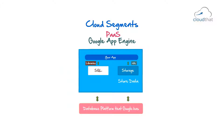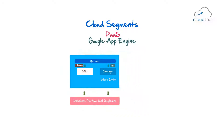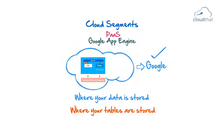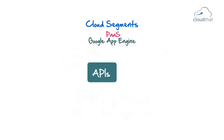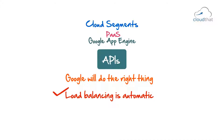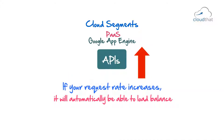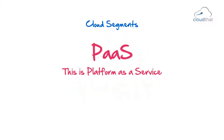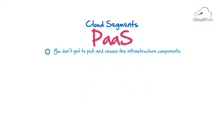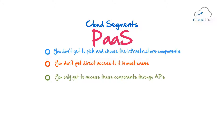At the end of the day, you are calling the APIs, and internally Google takes care of everything — where your data is stored, where your tables are stored. As long as you call the right APIs, Google will do the right thing. Load balancing is automatic, and if your request rate increases, it will automatically load balance. In Platform as a Service, you don't get to pick and choose the infrastructure components, and you don't get direct access to them in most cases — you only access these components through APIs.